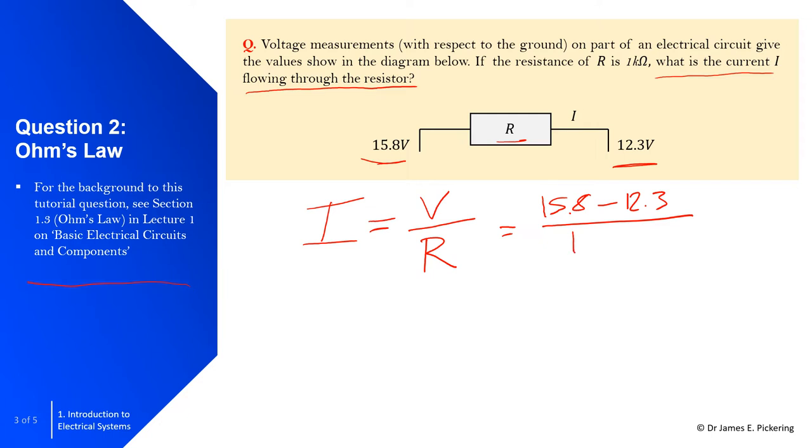One times 10 to the power of three is a thousand. That is going to be equal to 0.0035, and remember the units for current is amps. Alternatively, we can write this as 3.5 milliamps. Milliamps is just 10 to the power of minus three.